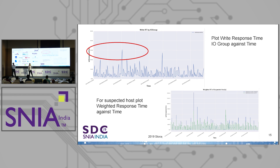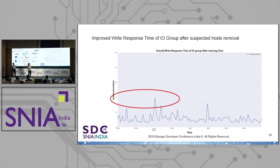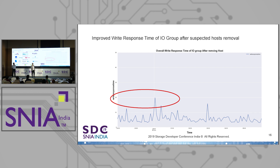As a remedial solution, we removed the noisy host and moved it to another IO group that had very normal response times. The spike went down from approximately 32 milliseconds to 20 milliseconds in the overall IO group response time.